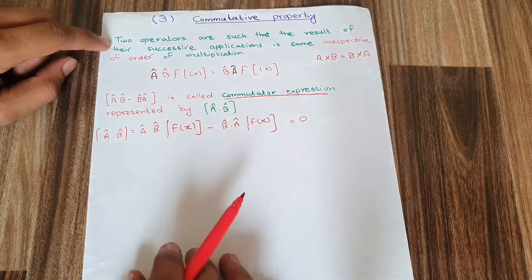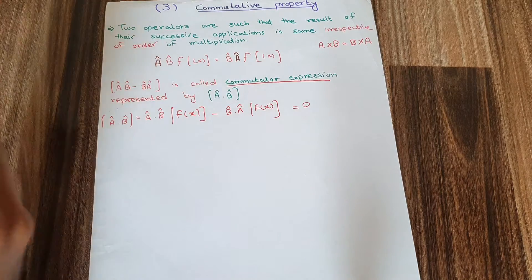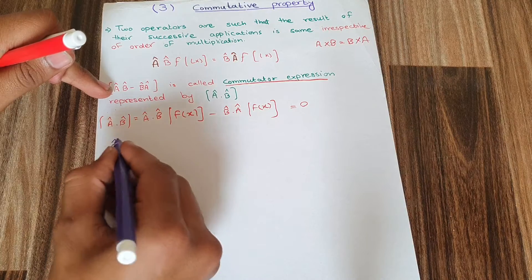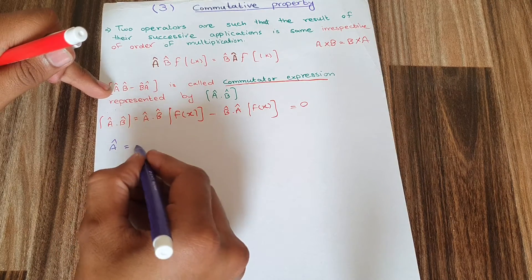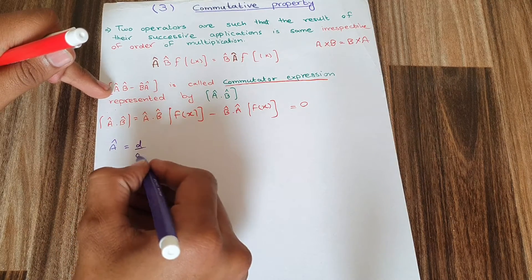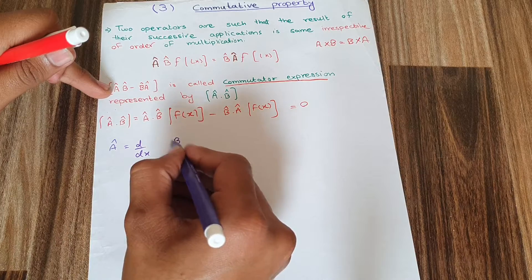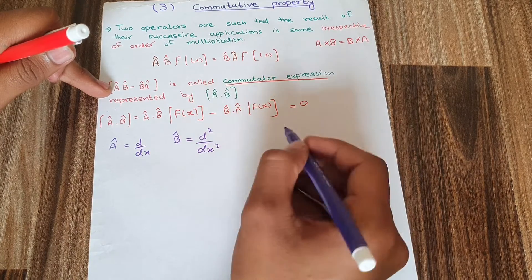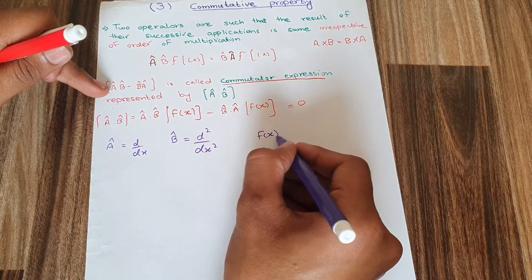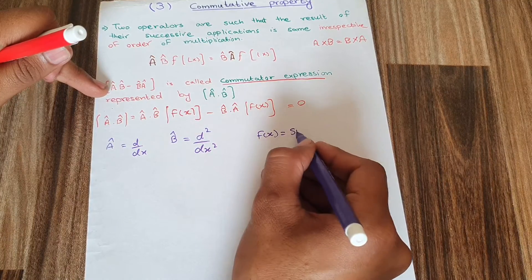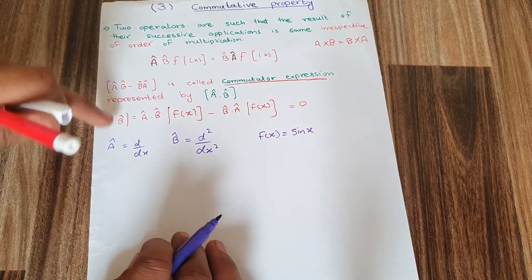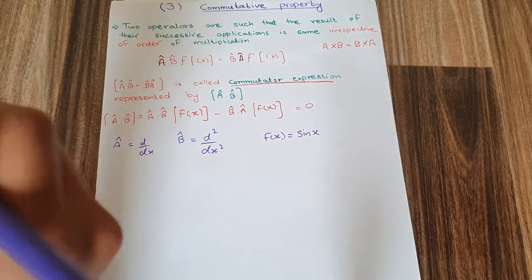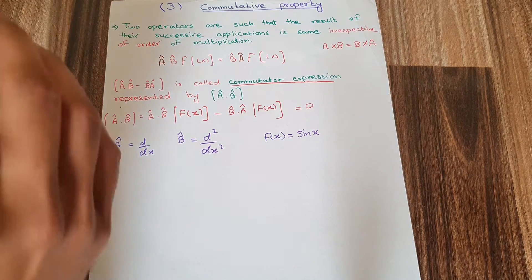Taking an example: let operator A equal d/dx (the derivative), operator B equal d²/dx², and the function f(x) equal to sin(x). Now I will prove commutativity by first applying A·B·f(x).